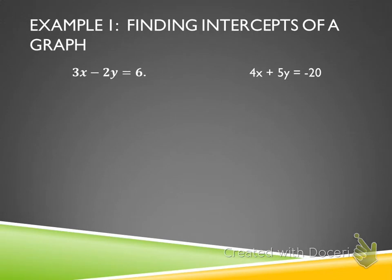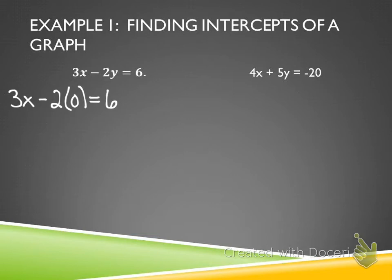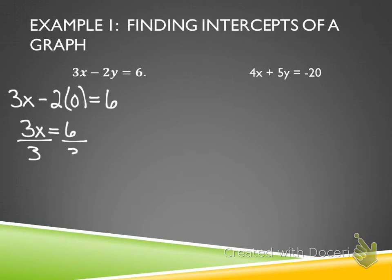In example one, I'm going to find the x-intercept for the first equation. To find the x-intercept, I substitute zero for y. That makes the y-term cancel out, and I'm left with 3x = 6. Divide both sides by three — my x-intercept is two.